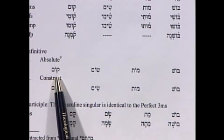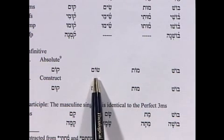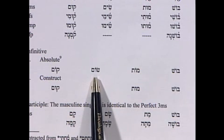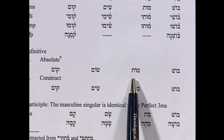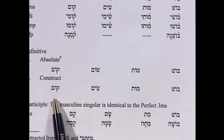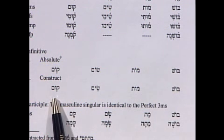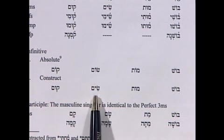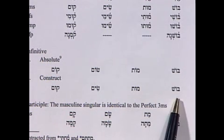The infinitive absolutes all have the holem-vav: qom, and even som (not sim), mot, and bosh again. For the infinitive construct, however, the verbs reveal their real nature: qum has the Vav, sim has the Yod, and then mut and bosh again.